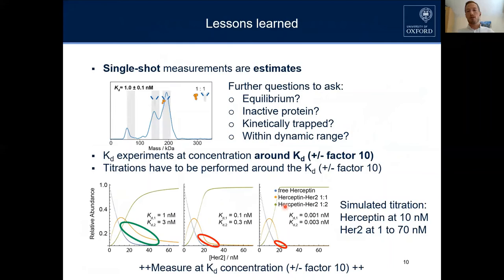From these experiments, the single-shot experiment is extremely useful because it is so quick — but it is only an estimate. So you should ask further questions: How can you prove that you are in equilibrium? Do you have inactive portions of your protein in the sample? Are you kinetically trapped, or are you within the dynamic range of our technique?